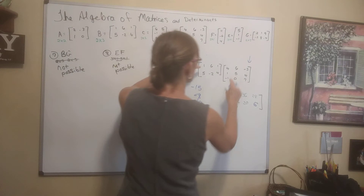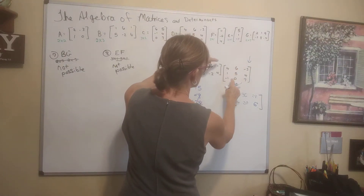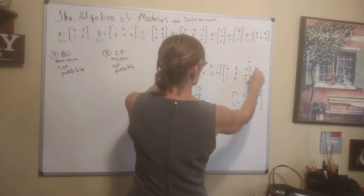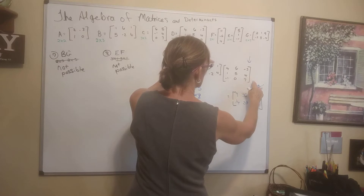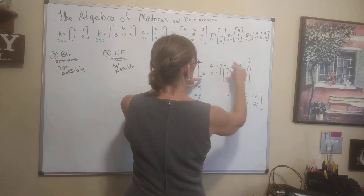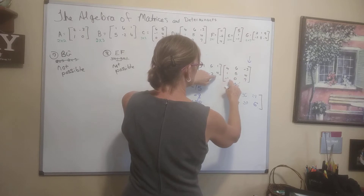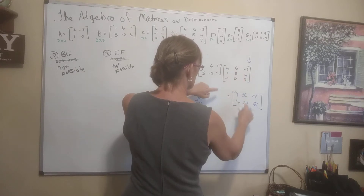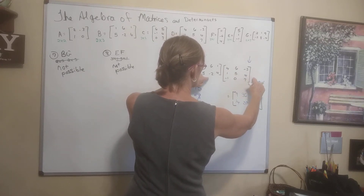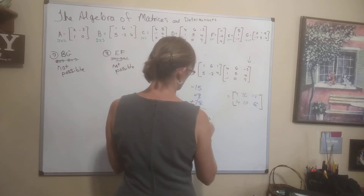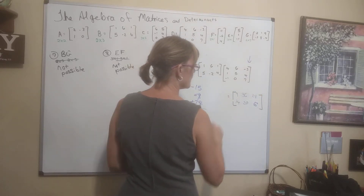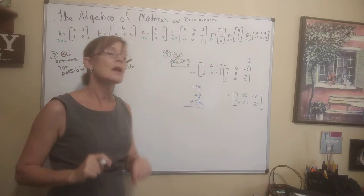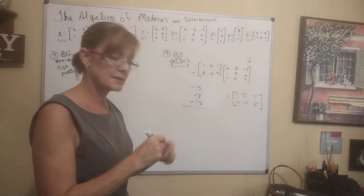I'm going to double-check my work real quick. Checking the values: 9, 36, 28, 14, 20, 5. I'm happy with that. So that's the multiplication of matrices. If you need to look at the last video and go slower to see how to plan it out, that is fine.